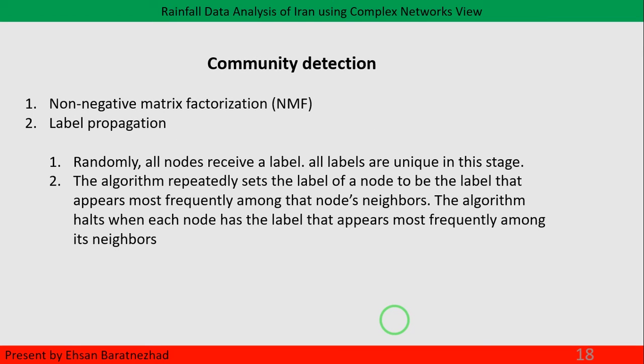The second approach is to find communities in a crisp way, meaning a node can only belong to one community. Label propagation is the algorithm we use to find non-fuzzy communities in the network. What label propagation does is straightforward: at the first step, it gives all nodes a unique label so no two nodes share the same label. In the next step, every node starts to propagate its label. After a few iterations of this step, nodes that have dense communication with each other end up with the same label — which is exactly what we expect from a community detection algorithm: to find those dense communications, which we call communities, modules, or clusters.